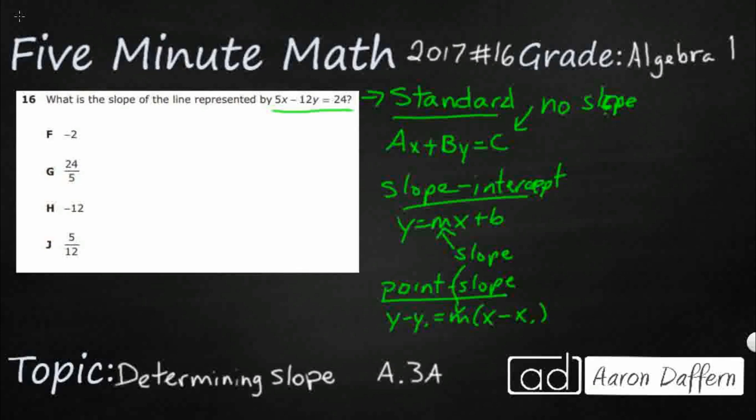So we are given an equation here that is in standard form. And what we need to do is we need to change standard form into our slope intercept form. Can't really change it into your point slope form because we don't have individual X and Y components that we could use there.